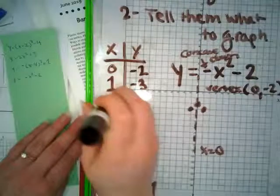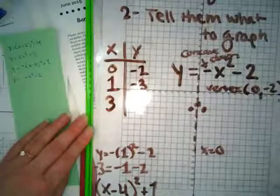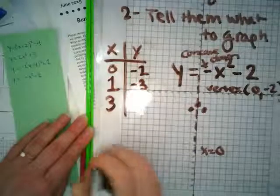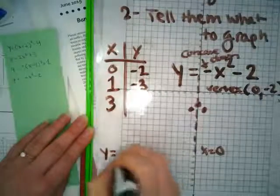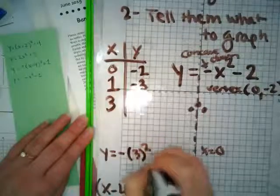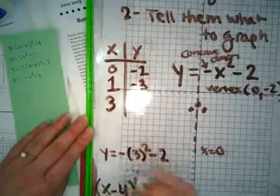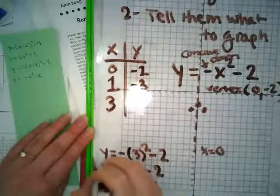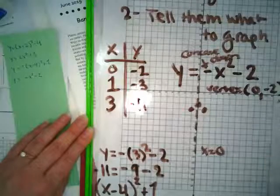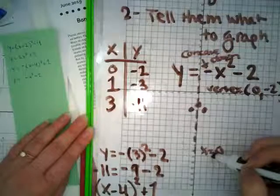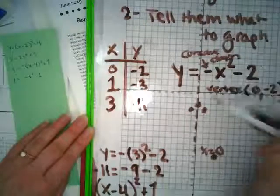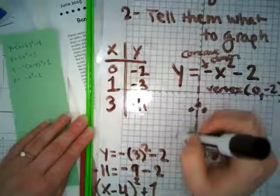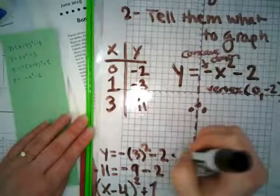What happens when x is equal to 3? What will my y equal? So I got y is equal to negative 11. Let's see. 3 squared is 9, times negative 1 is negative 9, minus 2 is equal to negative 11. And because my axis of symmetry is x equals 0, I can also say negative 3, negative 11 is a point on my parabola.